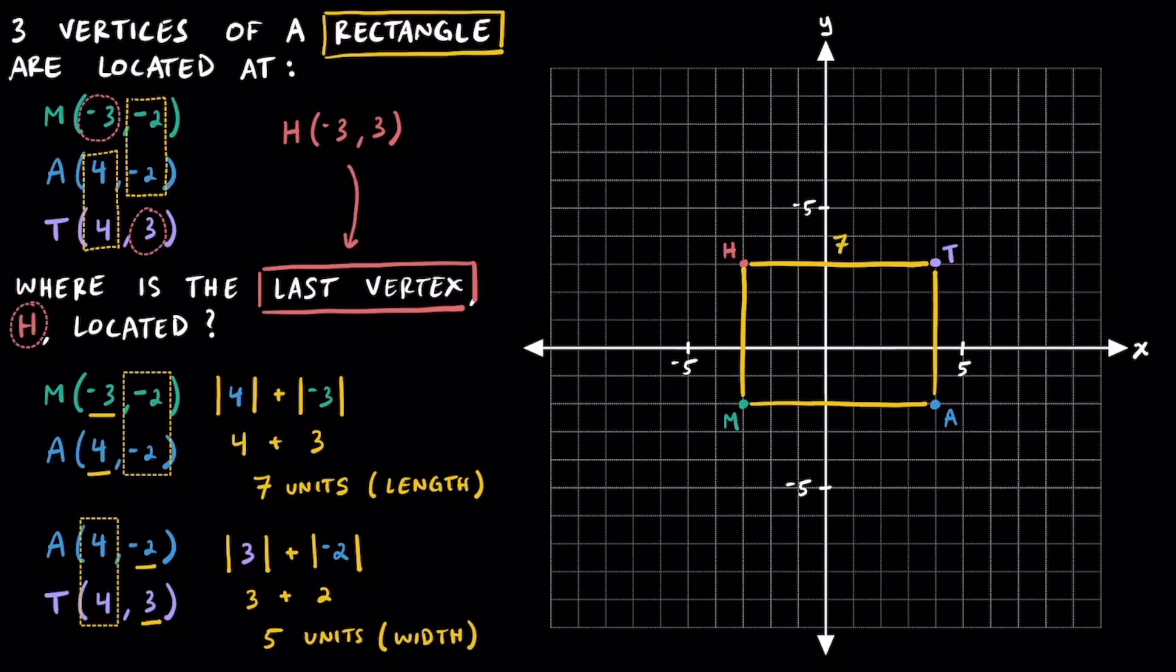The length of segment MA and HT are both 7 units and the length of segment AT and MH are both 5 units. The points next to each other like H and T and M and A have the same y-coordinates and the points on top of each other like T and A and H and M have the same x-coordinates.